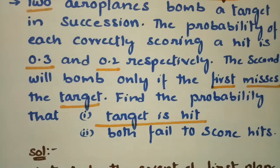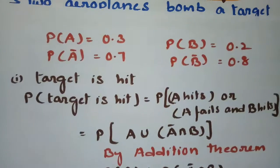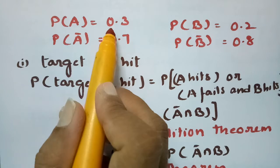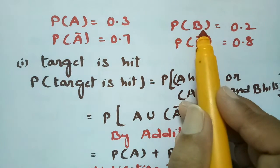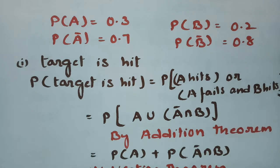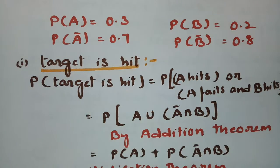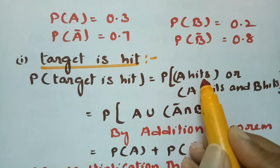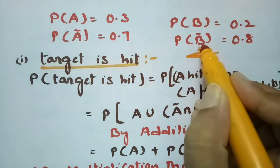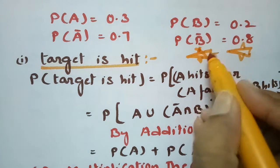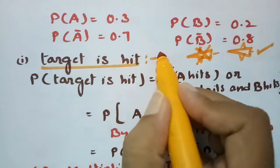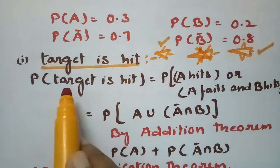For Question 1, the target is hit. There are two chances: either A hits the target, or if A fails, B hits the target. There are two planes — if A hits, the task is completed. If A fails, then plane B hits the target.